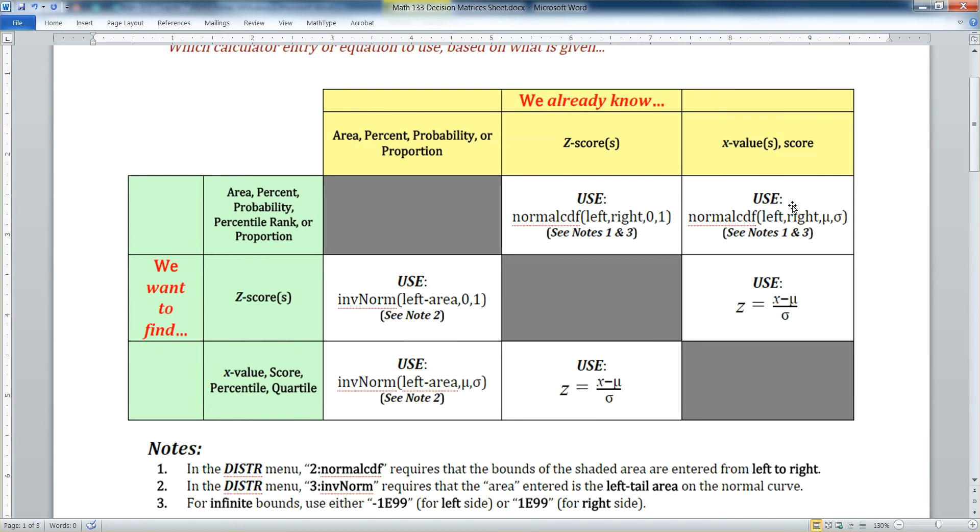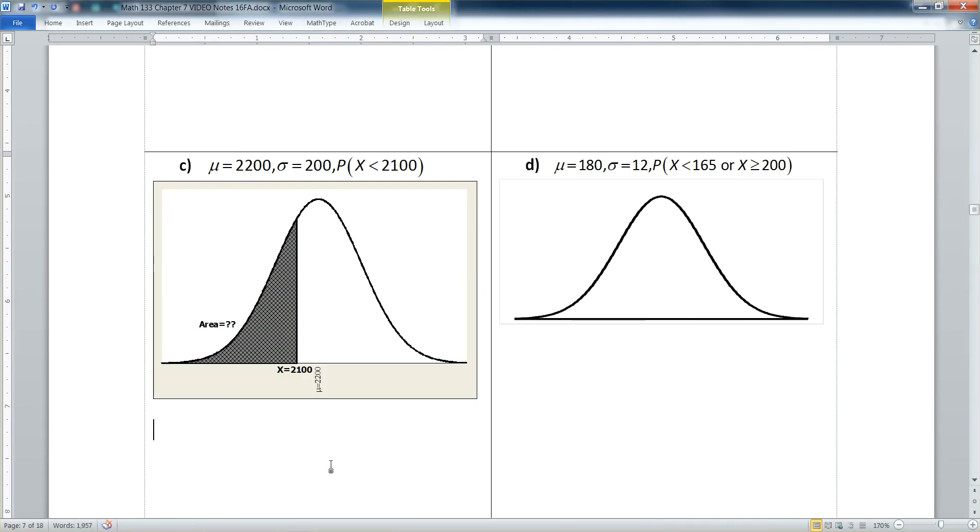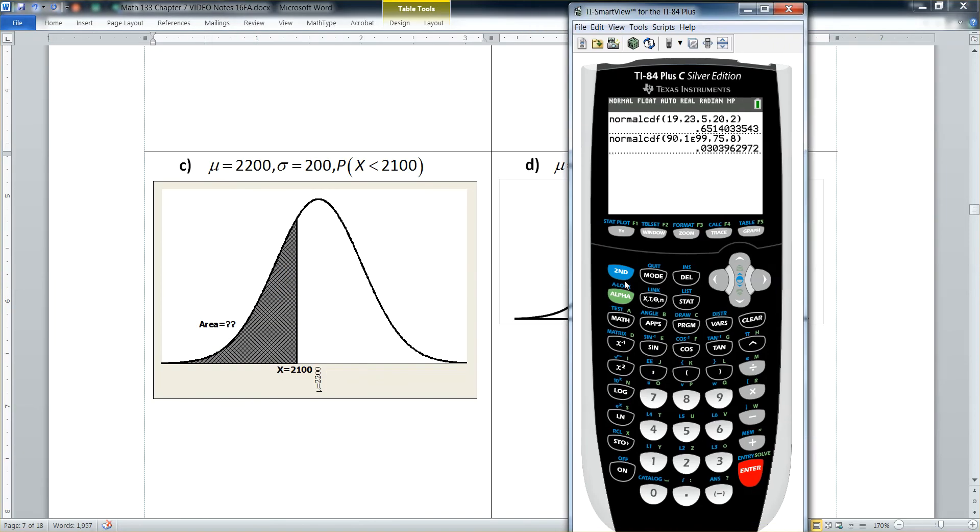Again, we know X values. And again, we want to know probability. So we're still sitting in this top right corner of normal CDF left comma right, but this is an infinite bound to the left side. So we actually want to use negative one E 99 for our left side. So let me grab the calculator, go to distribution, grab number two, normal CDF, and my left-hand edge of the shaded region. Because this shaded region goes forever, I basically want to tell the calculator negative infinity. But the calculator doesn't have a negative infinity. So I tell it negative one E 99.